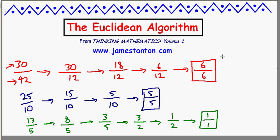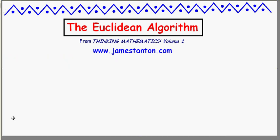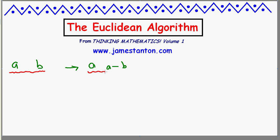The important question: why does this work? What we're really doing is taking two numbers, let's say A and B, and subtracting them from each other. I'll pretend A is the larger, so I'm making them A and A minus B. And this is the key to the algorithm: any common factor of A and B is also a common factor of A and A minus B, and vice versa.